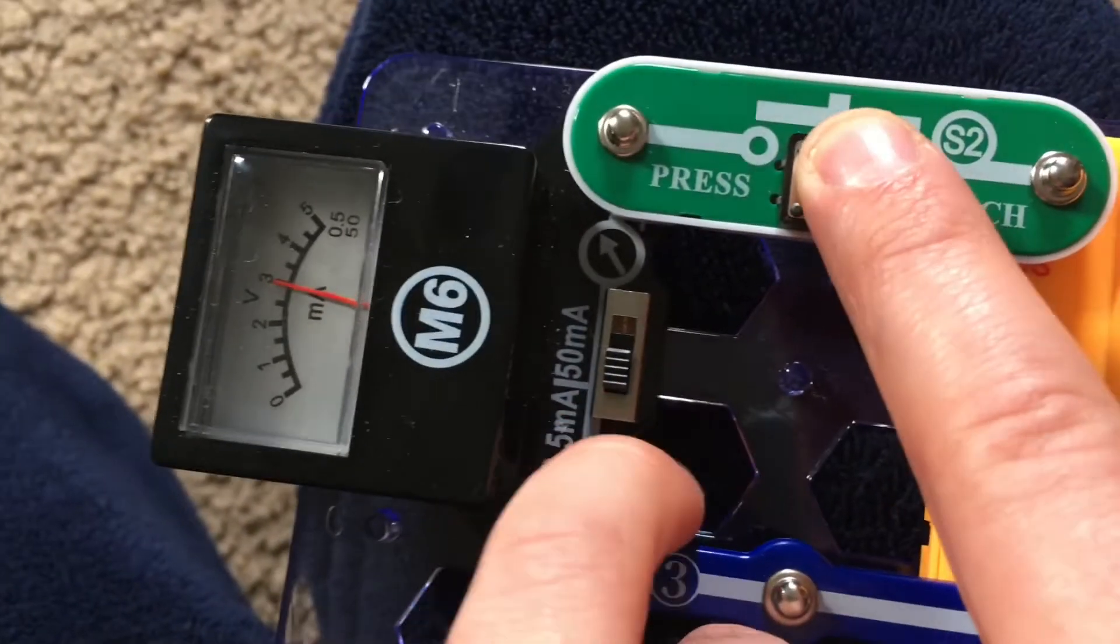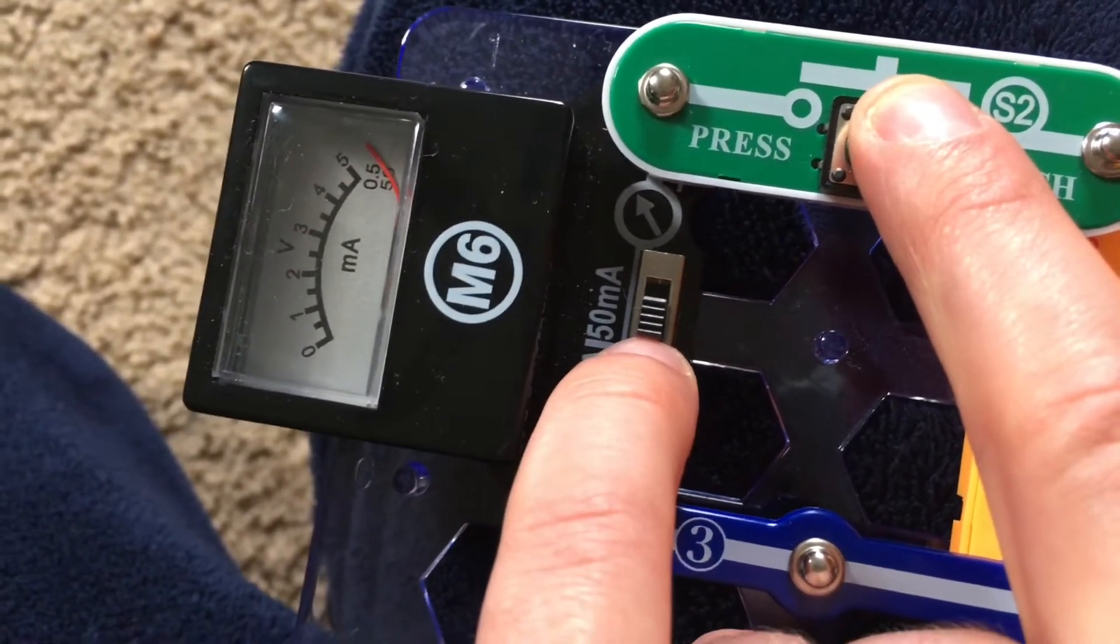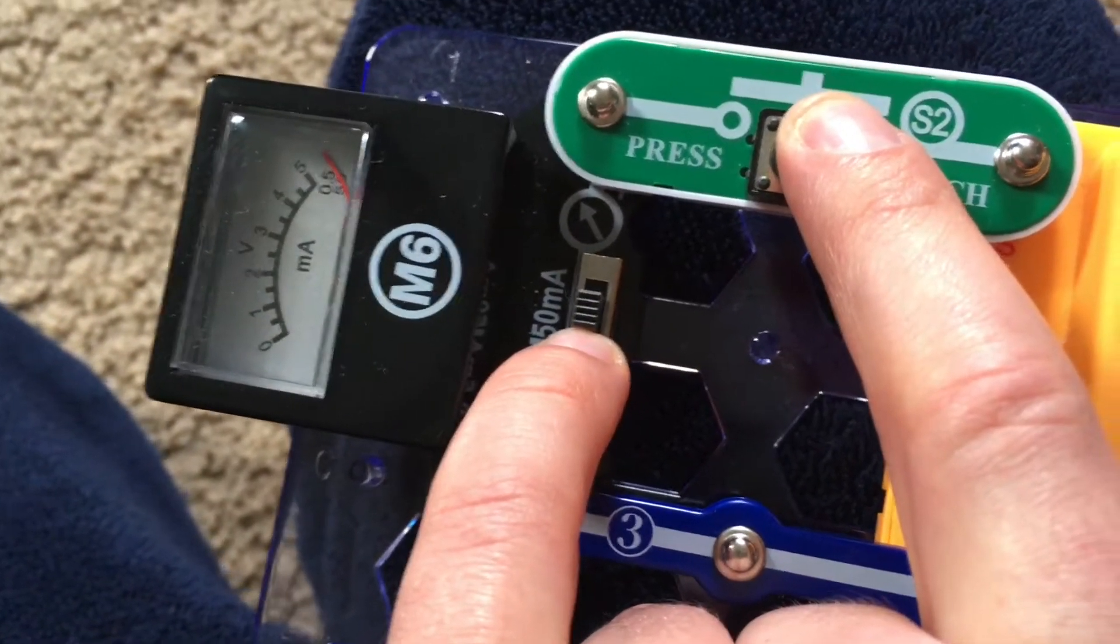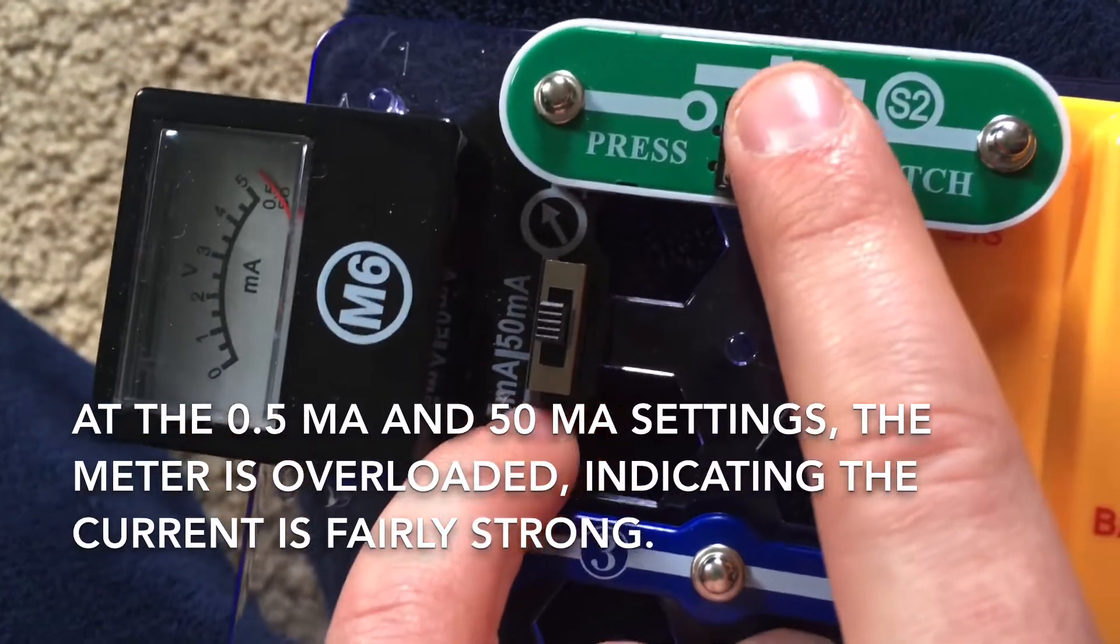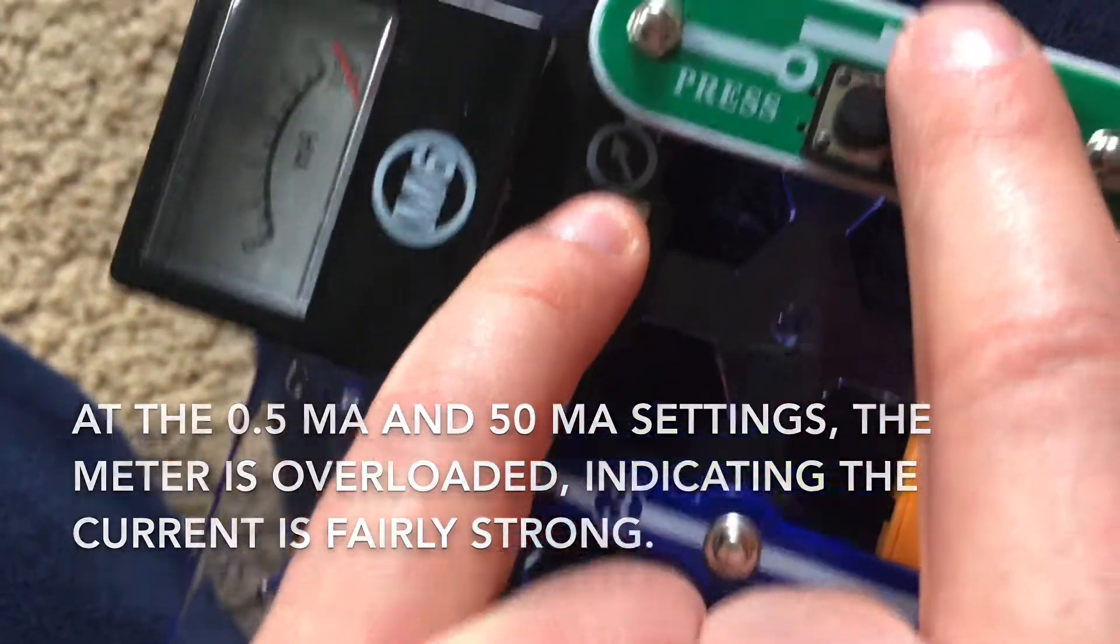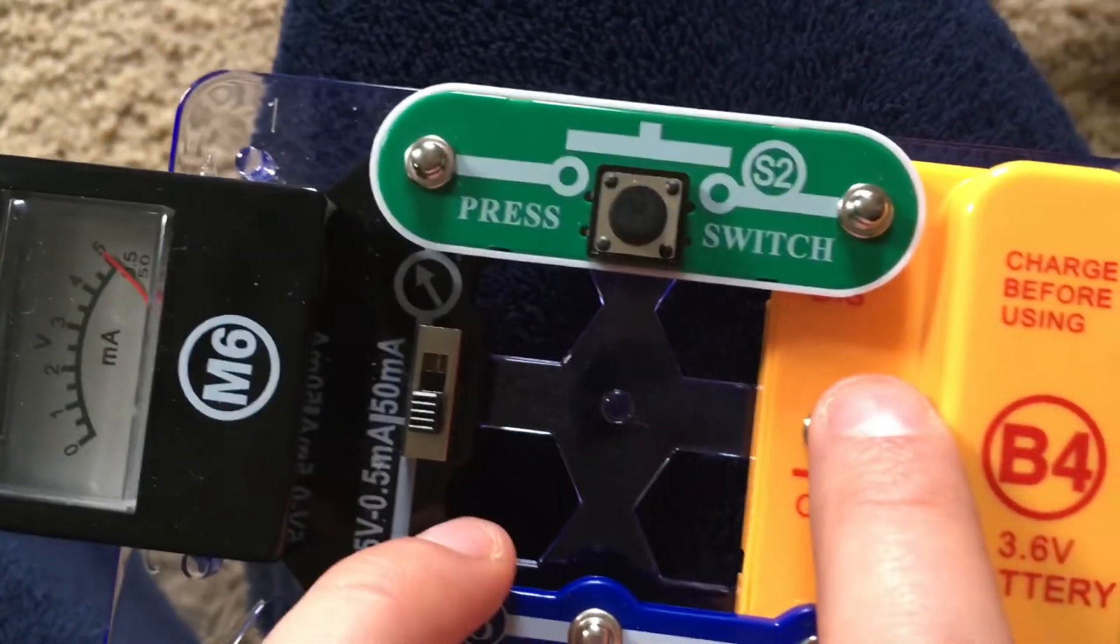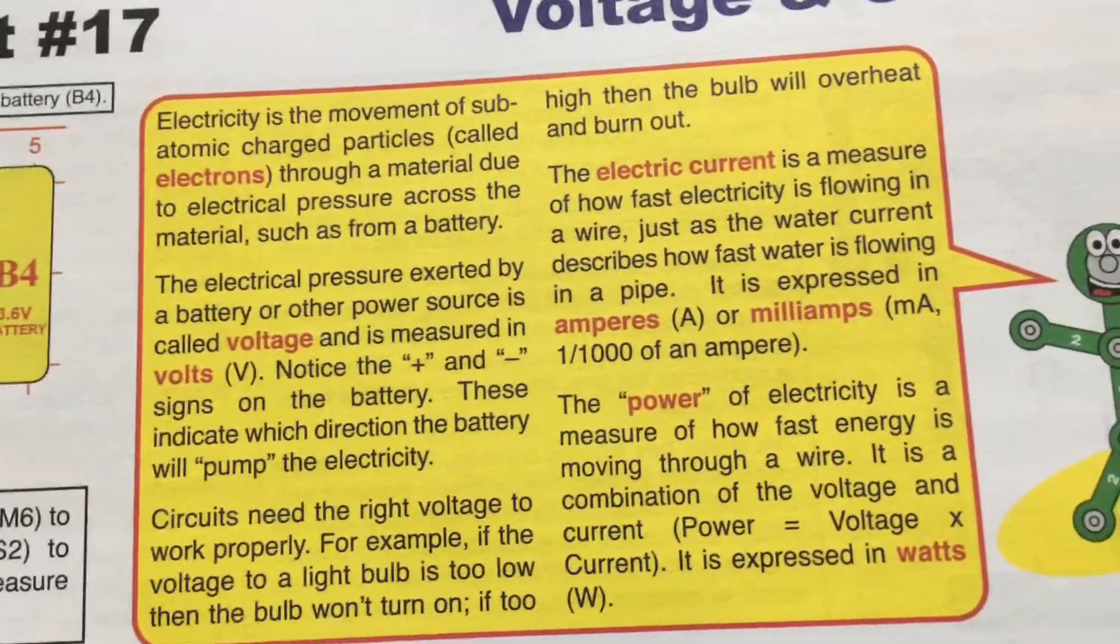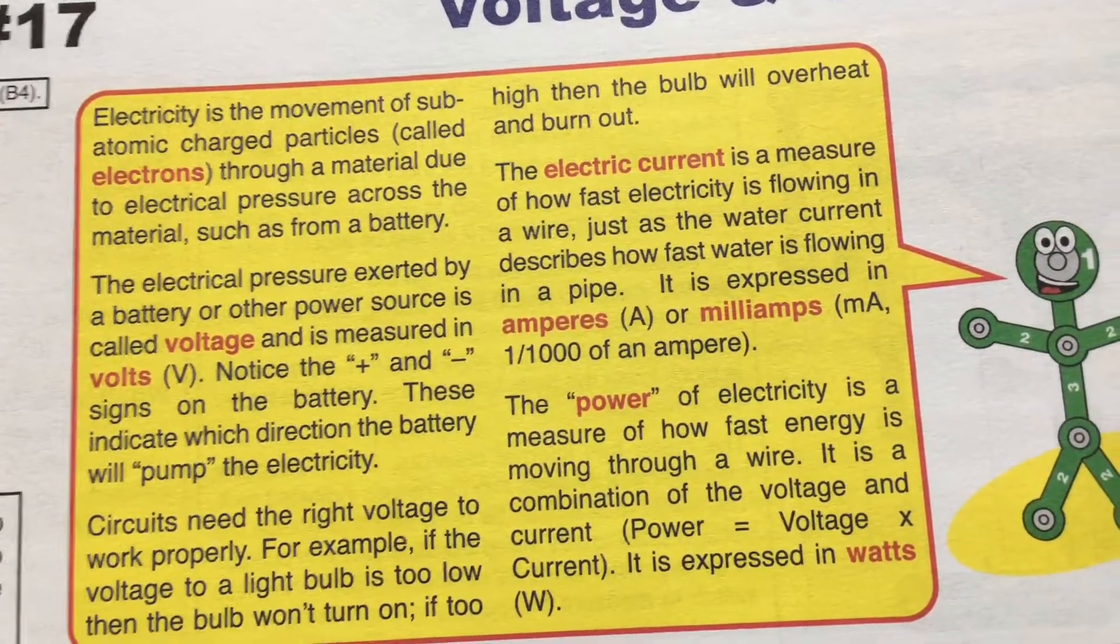Now, when I move the switch over to the second setting, 0.5 MA, as well as 50 MA, the meter is overloaded. It's unable to measure how much is flowing through. But, it's important to know the difference between volts, amperes, or milliamps, and watts.